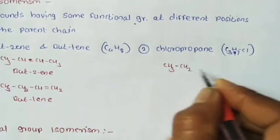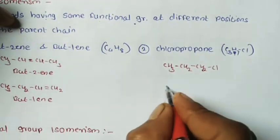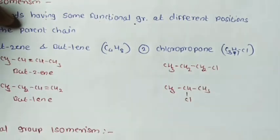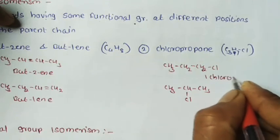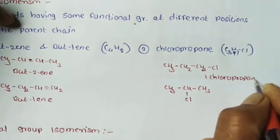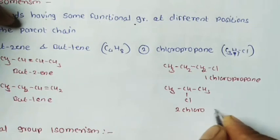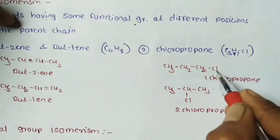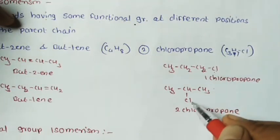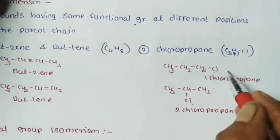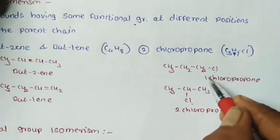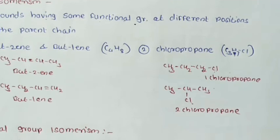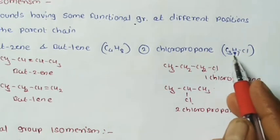Another example of position isomerism is chloropropane with formula C3H7Cl. First isomer: CH3-CH2-CH2Cl (1-chloropropane), where chlorine is on the first carbon. Second isomer: CH3-CHCl-CH3 (2-chloropropane), where chlorine is on the second carbon. Molecular formula same, functional group same, but position of the functional group on the parent chain is different.